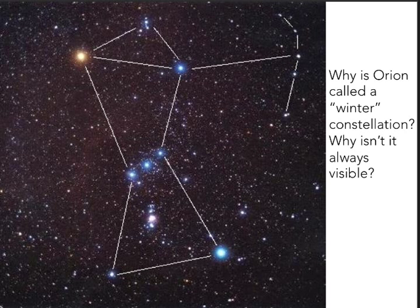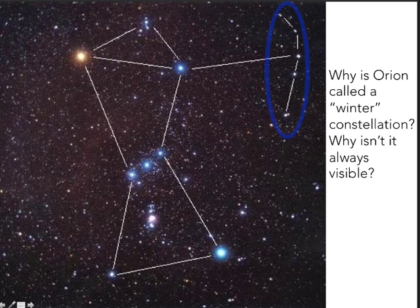Orion is a really interesting constellation and a very easy one to pick out in the night sky because of its distinctive shape. In particular, you should look for two very bright stars. Orion is an archer — these are his shoulders and these are his feet. This is Orion's belt and his sword, and because he's an archer, he has an arm extending with a bow. Two things to look for are the three stars that line up to form his belt, and the two very bright stars named Betelgeuse and Rigel. Betelgeuse is Orion's right shoulder, and his left foot is Rigel.